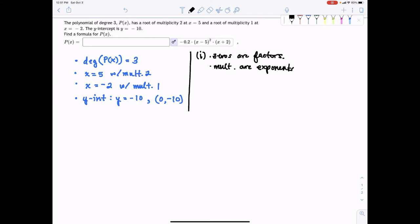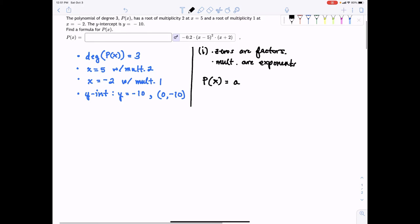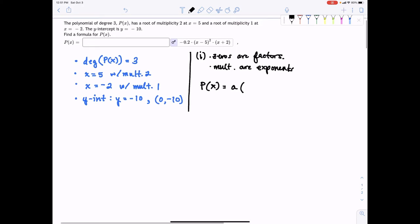So let's go ahead and start. So this would mean that p(x) is equal to some leading coefficient a, whatever that may be, times, and let's write our zeros as factors. Our zeros were given as x equal 5 with multiplicity 2 and x equal negative 2 with multiplicity 1. So we have x minus 5 with multiplicity 2 times x minus negative 2 with multiplicity 1.